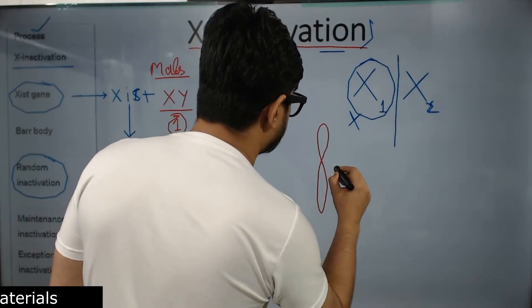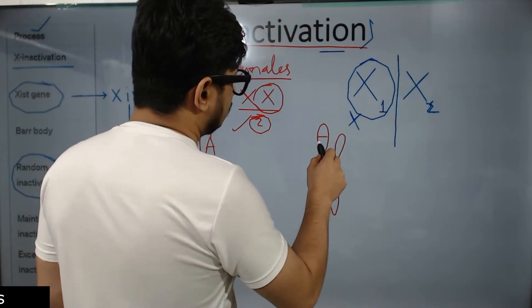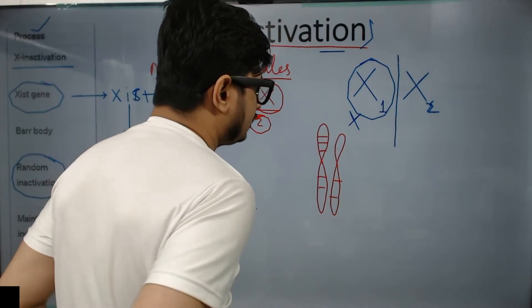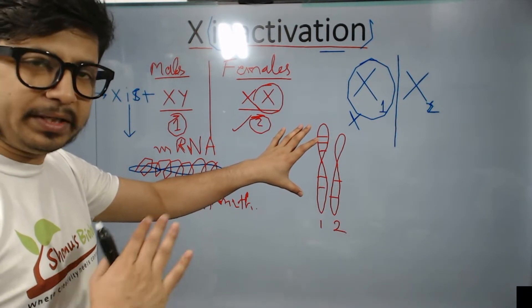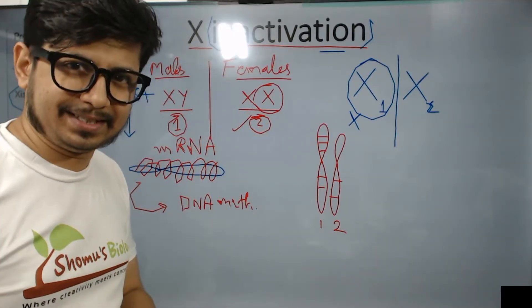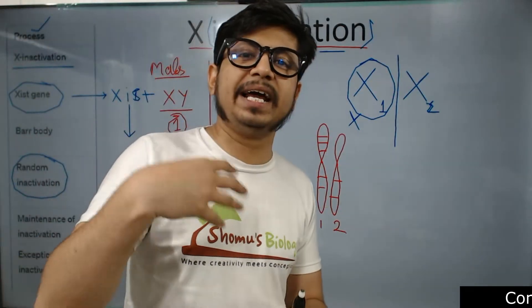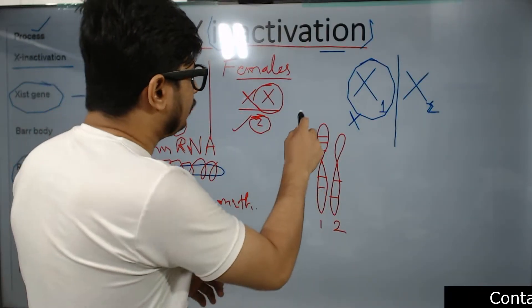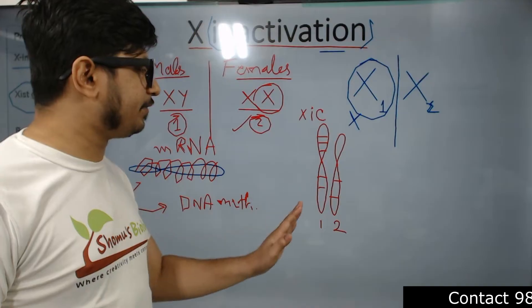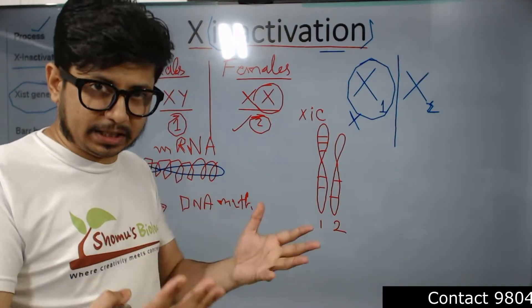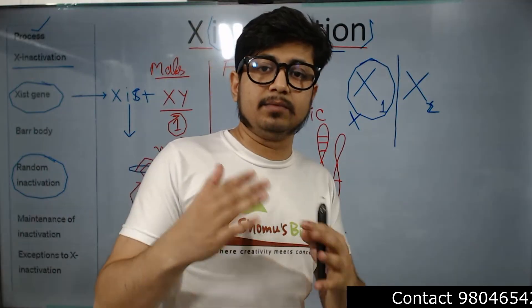One X chromosome may have multiple XIST genes. Let's imagine two X chromosomes: one carries four or five XIST copies, the other carries only two. The X with more XIST has a higher chance of being condensed and inactivated. This region is called the X-inactivation center, or XIC. The XIC plays a vital role in determining which X will be inactivated.